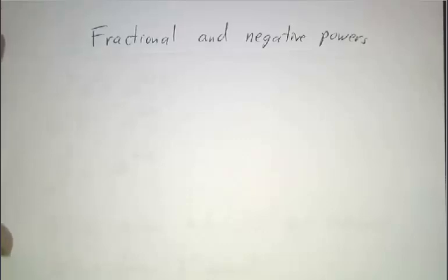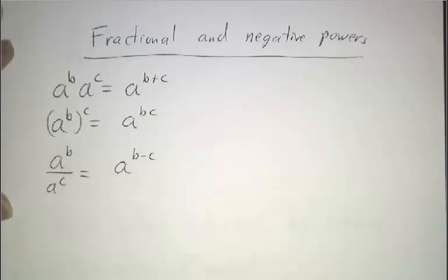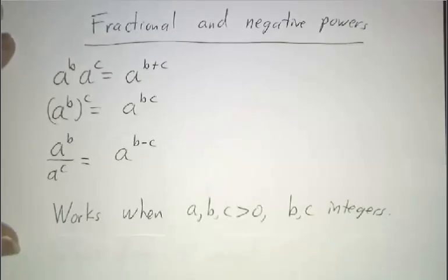Last time we explored the laws of exponents and figured out how they worked as long as we were talking about positive integer powers, multiplying numbers by themselves over and over again. We saw that a to the b times a to the c was a to the b plus c, that a to the b to the c power was a to the bc, and that a to the b divided by a to the c was a to the b minus c.